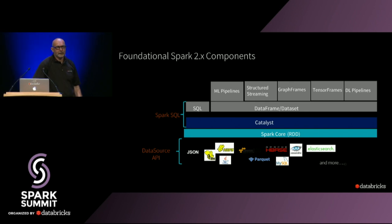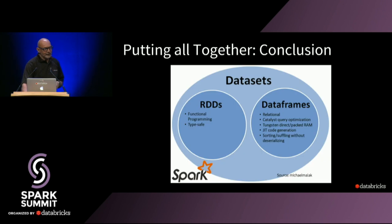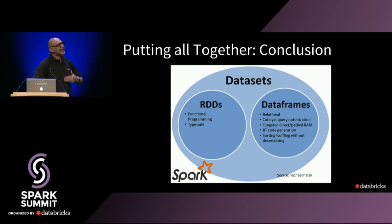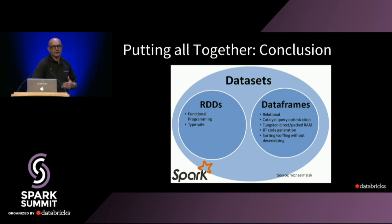The cost-based optimizer (CBO) is going through incremental performance enhancements. In Apache Spark 2.2, they released a cost-based optimizer that attaches statistics to your query. If your query is really expensive, it will find the best way to express it. Putting it all together in conclusion: Datasets are the universe of everything — they have the best of both worlds from RDDs in terms of compile-type safety and functional programming.